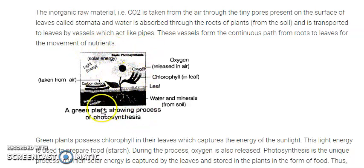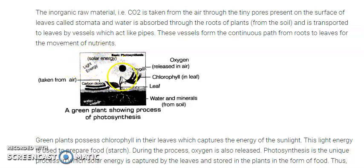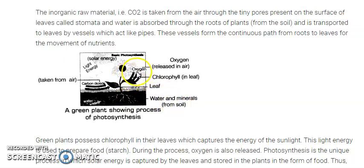Looking at the diagram, we can see the plant taking in carbon dioxide from the air, receiving solar energy from the sun, with the leaf being green due to the presence of chlorophyll. The roots are in the soil and absorb water and minerals. The plant then releases oxygen and uses carbon dioxide to form food.